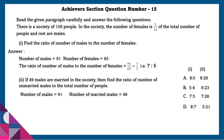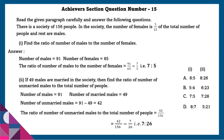If 49 males are married in the society, find the ratio of unmarried males to total people. Number of males equals 91, married males equals 49, so unmarried males equals 91 minus 49 equals 42. Ratio of unmarried males to total people equals 42:156, simplified to 7:26.